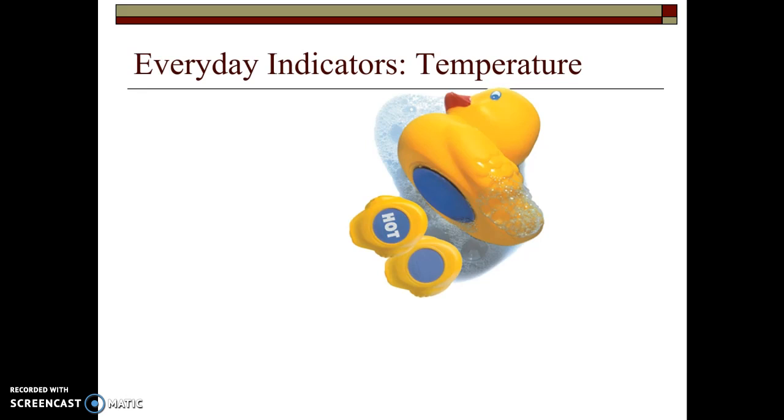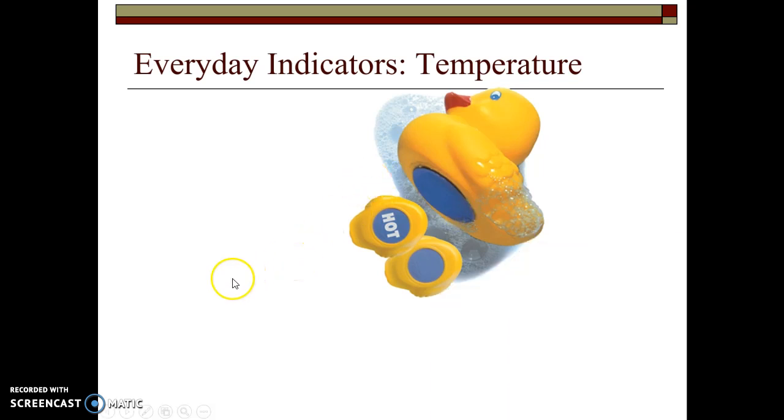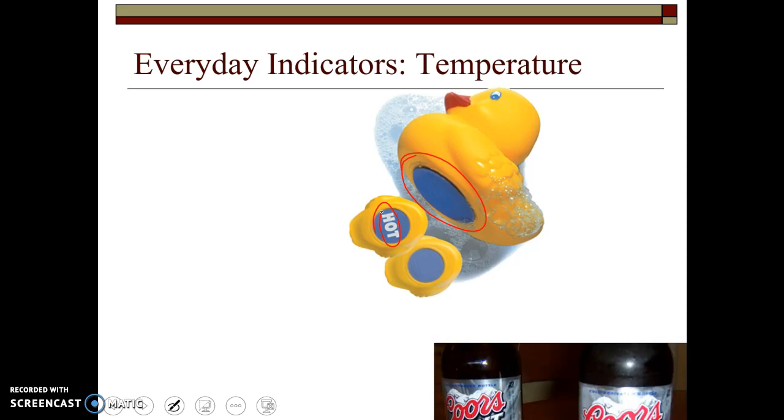Another example that I had when my kids were younger was this little rubber ducky, and it normally was all blue on the bottom. I'm sorry, give me a second here. But when you put it in water, if the water was really, really hot, there was a certain section of this that would actually turn white, and it would spell out hot. So we would know, oh, it's too hot for the little kiddos to go in there, so we need to let it cool off some. So that's a temperature indicator.